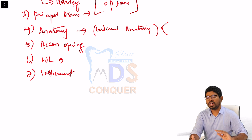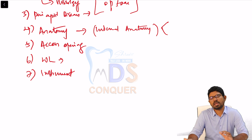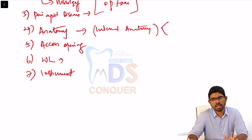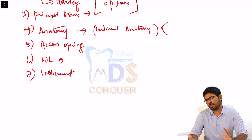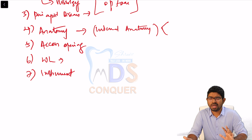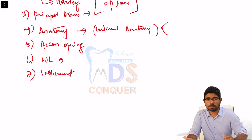Also learn about recent instrumentation and different types of irrigation devices. For example, Apexum — it's known to PG students but not covered in UG textbooks; it's article-based. Questions ask what Apexum is, where it is used, its advantages, and its speed. AIIMS regularly picks SR-ship concepts and questions directly, so you cannot escape this area and must study it top to bottom.